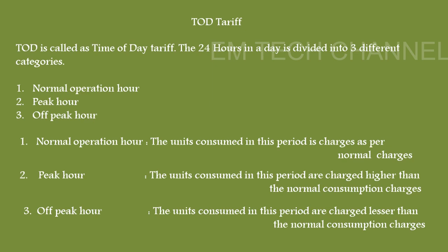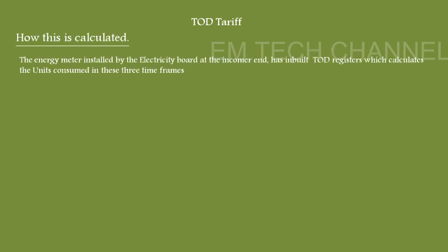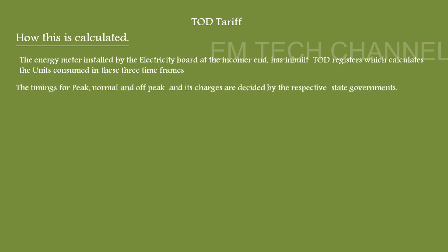The energy meter installed by the electricity board in our facility has a special inbuilt register that is pre-programmed as per the time slots set by the respective state governments. The cumulative energies consumed in each time frame are calculated in these registers, and this data is fetched and used for billing purposes. TOD users are billed across three time frames — peak, normal, and off-peak — and the charges are decided by the respective state governments.